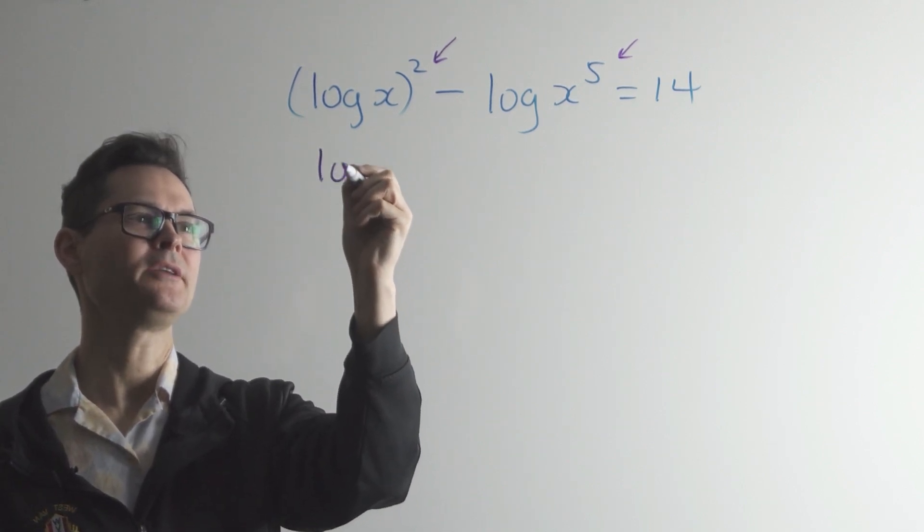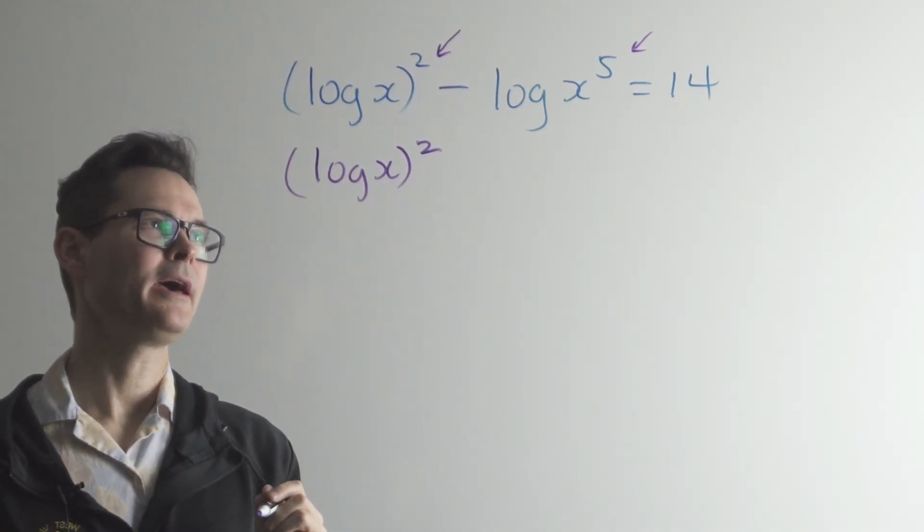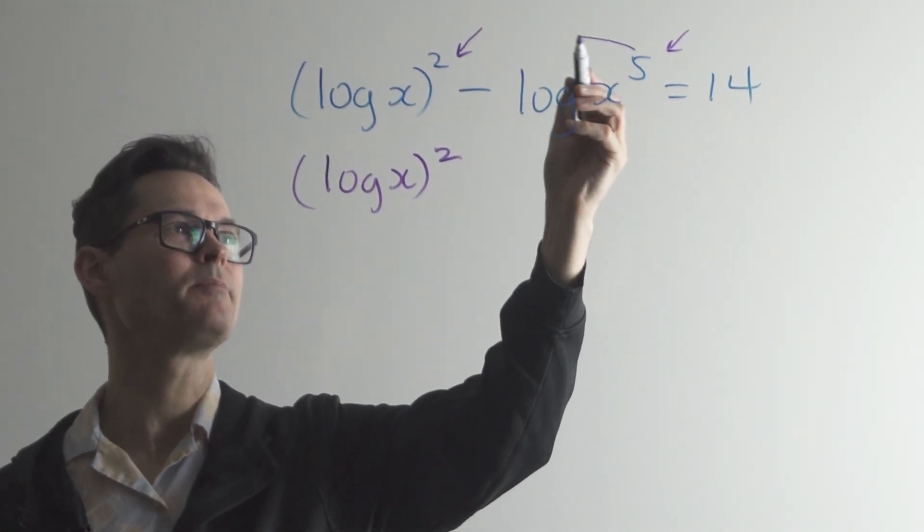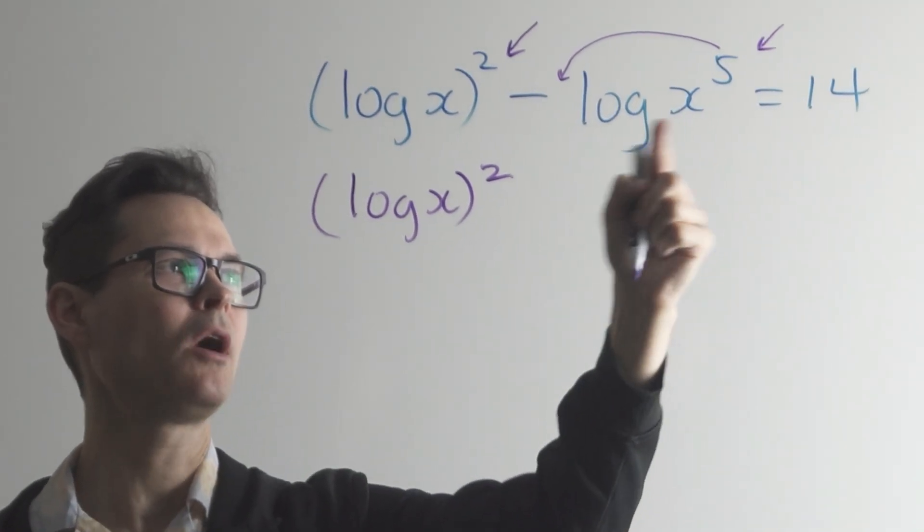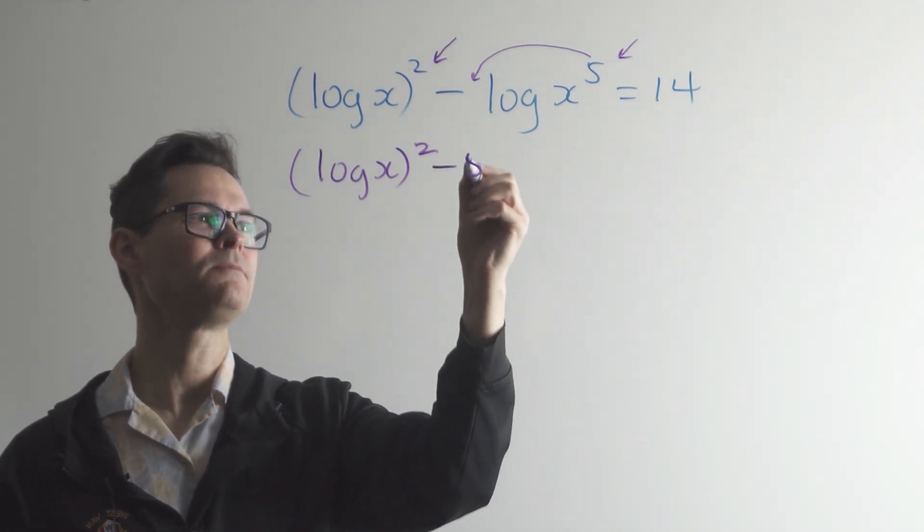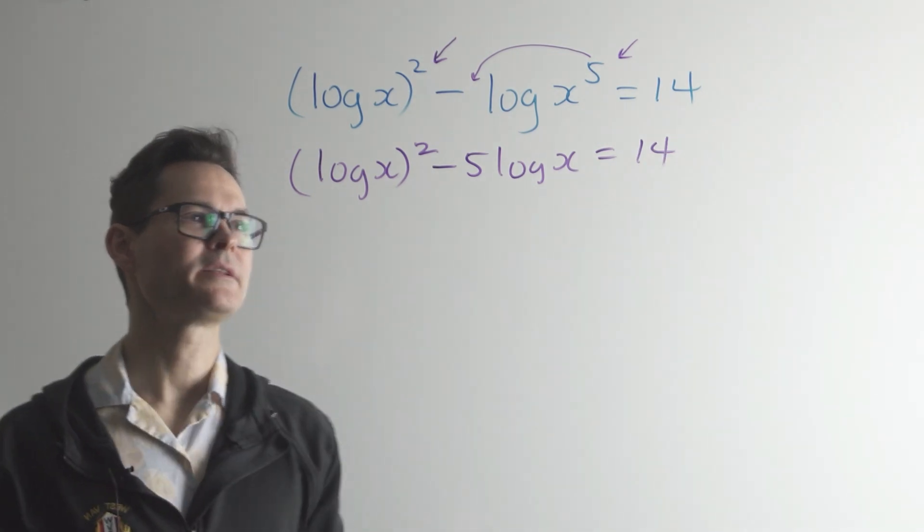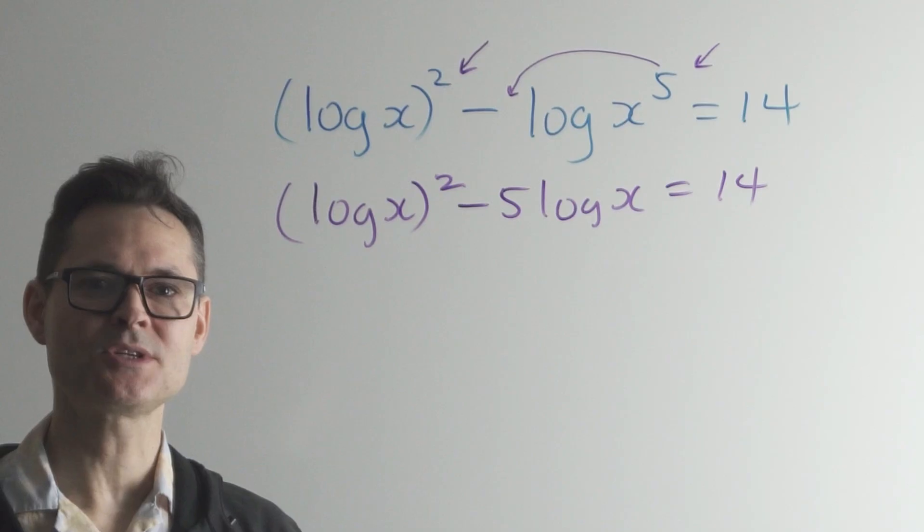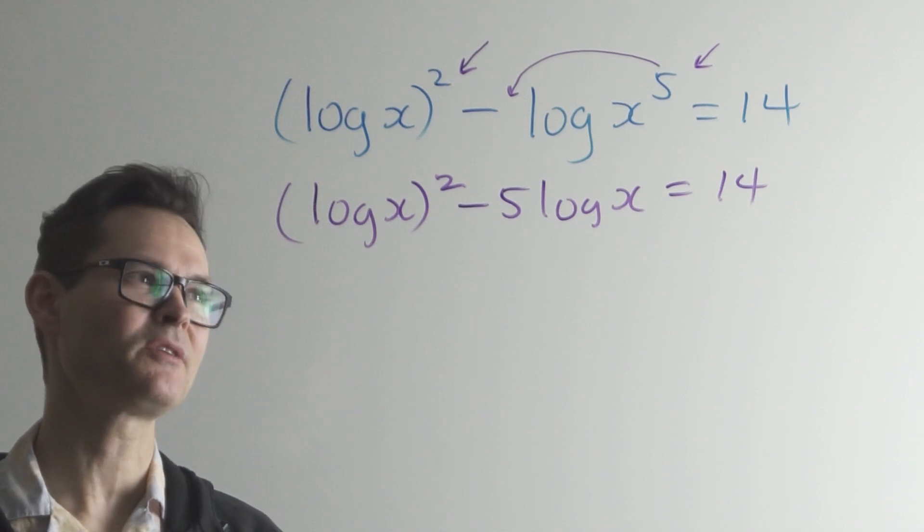So I'm just going to rewrite the first term, and I'm going to use the power law. So in logs, the power law is that if you're logging a power, the exponent on the power can become a coefficient. And that's really enough to expose it for what it really is, which is a quadratic with an inside function, which is a log function.